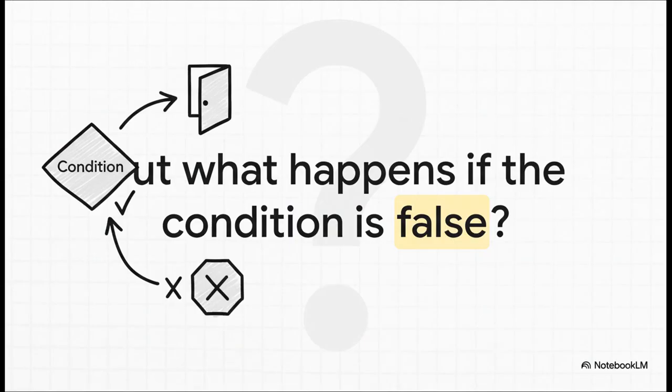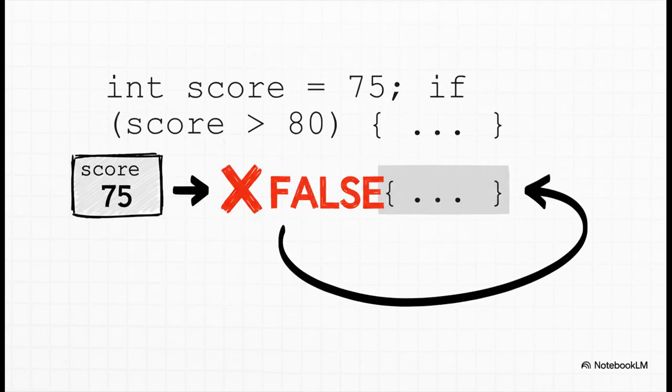This is just as important as knowing what happens when it's true. I mean, a smart program needs to know what to do when the answer is no, right? So let's check this out. The score is 75. The condition asks, is the score greater than 80? Well, no, 75 is not greater than 80. So this time the condition is false. And because it's false, the code inside those curly braces gets completely ignored. The program just skips right over it. The excellent message never sees the light of day.